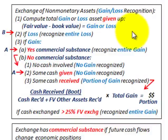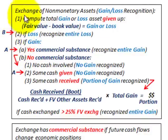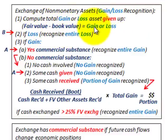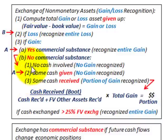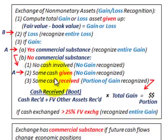You can focus in on these here and write them down if you want, but this is where you would start when you're working with these problems. I've got them listed here in step form. Number one, compute the total gain or loss of the asset given up. Fair value minus the book value determines any gain or loss. And then if there's a loss, you'd recognize the entire loss. If a gain, then you have to make your decision criteria here to determine if there's any commercial substance involved.